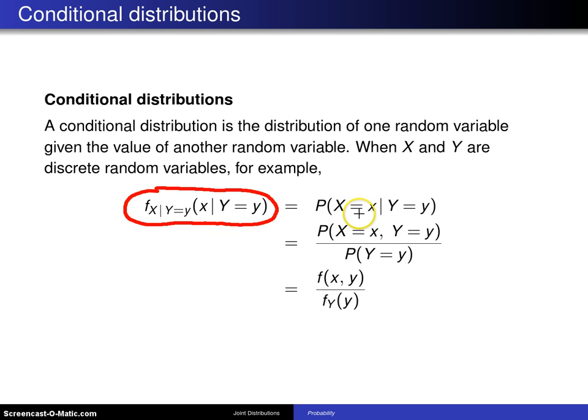That is the same as the probability X equals x given Y equals y. Using the usual definition of conditional probability, probability of A given B is the probability of A intersect B divided by the probability of B. You recognize the numerator as the joint probability mass function and you recognize the denominator as the marginal probability mass function of Y.